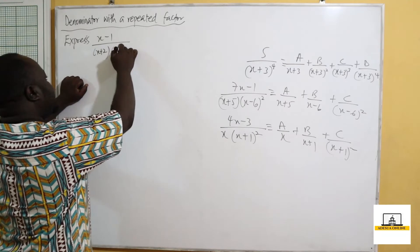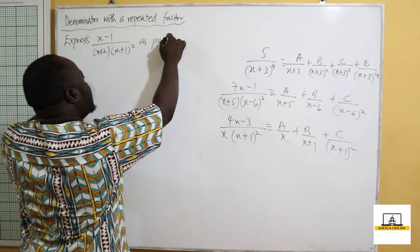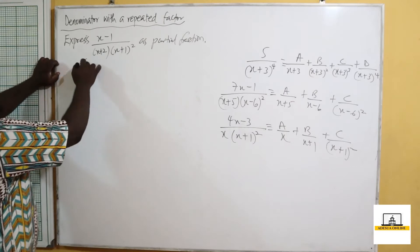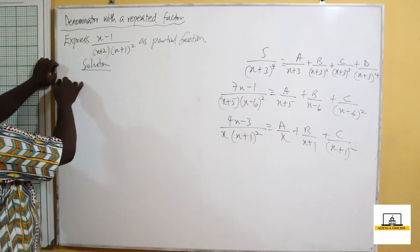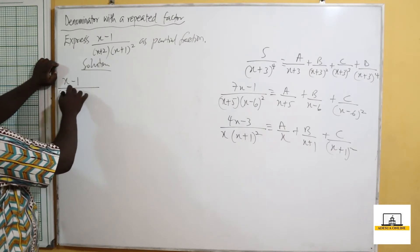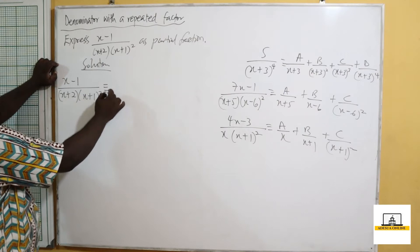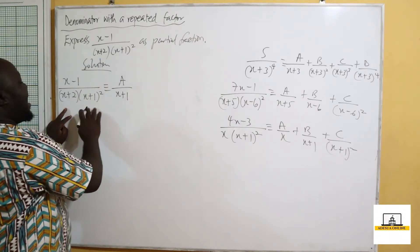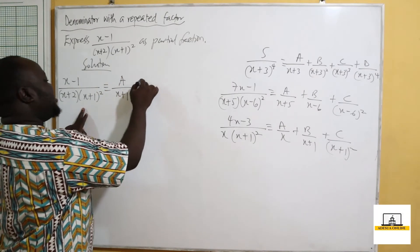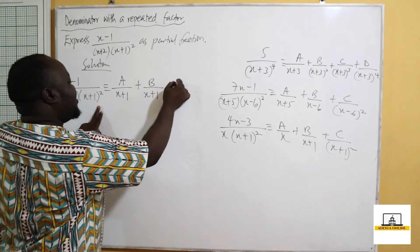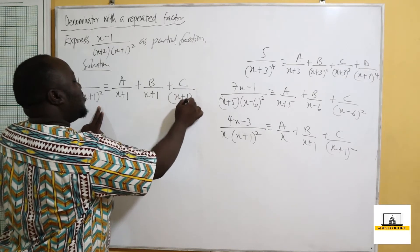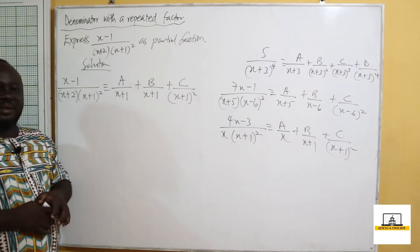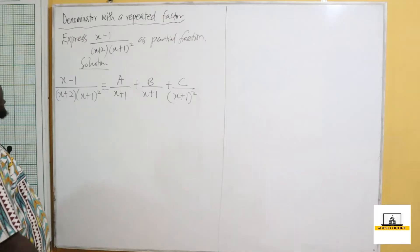Let's solve an example: express (x−1) over (x+2)(x+1)² as partial fractions. In the solution, we have (x−1) over (x+2)(x+1)². Since (x+2) is linear, we write A over (x+2). Since (x+1) is a repeated factor, we write B over (x+1) plus C over (x+1)². This is how we express it in partial fractions, and now we solve for A, B, and C.